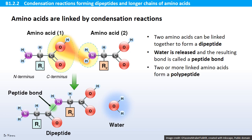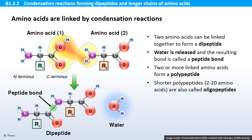Two or more linked amino acids form a polypeptide. Shorter polypeptides are also called oligopeptides. You can talk about dipeptides if there's only two amino acids, and tripeptides if there's three amino acids.